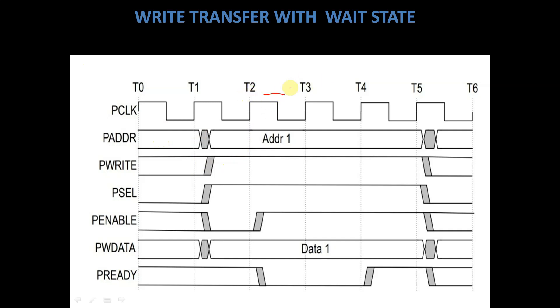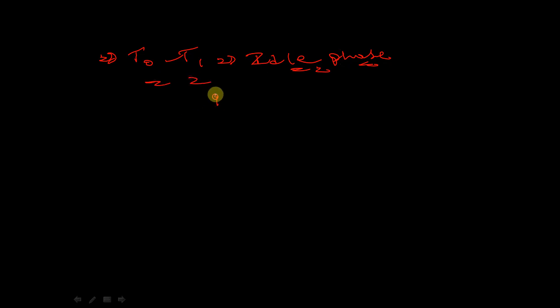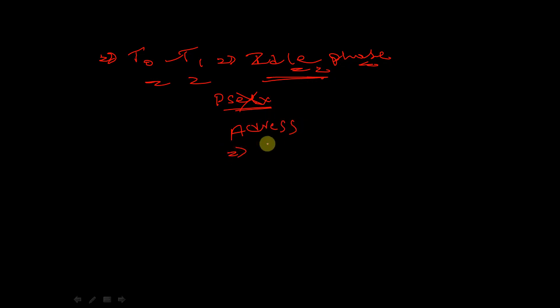Let's see the example for right transfer which includes a wait state. In this example, during clock cycle T0 to T1, this is an idle phase. Since no Pselect has been selected, the address information and the data information is unknown in this state T0 to T1, which is an idle phase.